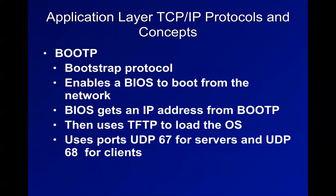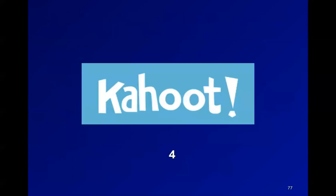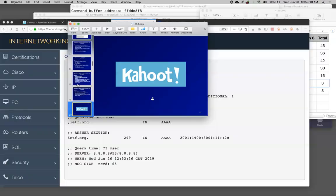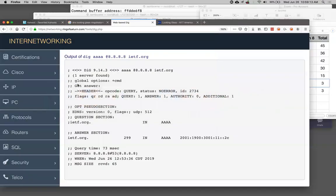BootP is the precursor to DHCP, to assign an address to a machine when it boots up - very rarely used anymore. DHCP is what everyone uses. Your machine boots up, sends out a broadcast message, gets an IP address to use - it's a four-way handshake system.